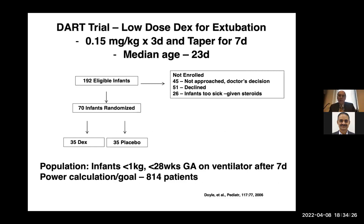The DART trial published in 2006 was designed for 3,000 babies but could only enroll 192 — 70 were randomized, 35 to dexamethasone and 35 to placebo. These were infants less than 1 kg, less than 28 weeks, on a ventilator at 7 days of age. Only 70 were treated because concern about dexamethasone meant people couldn't get consent.